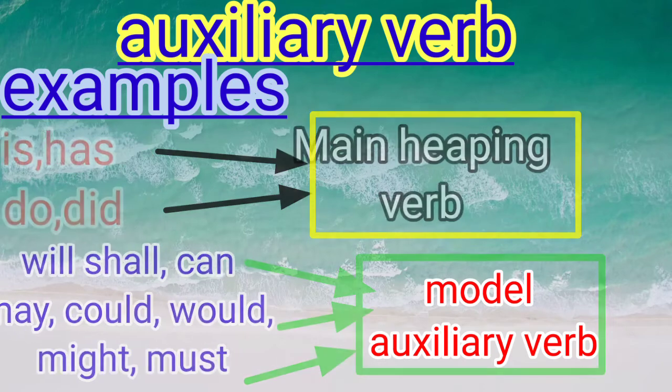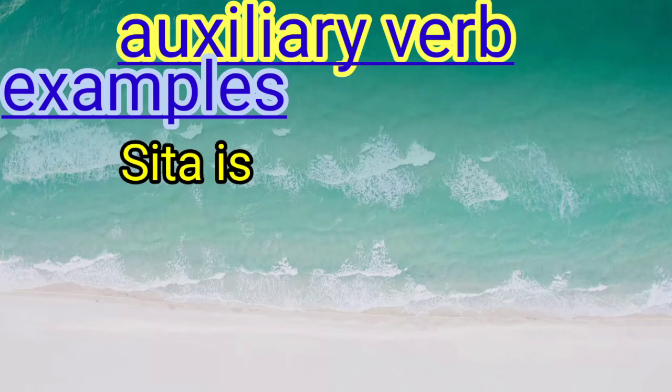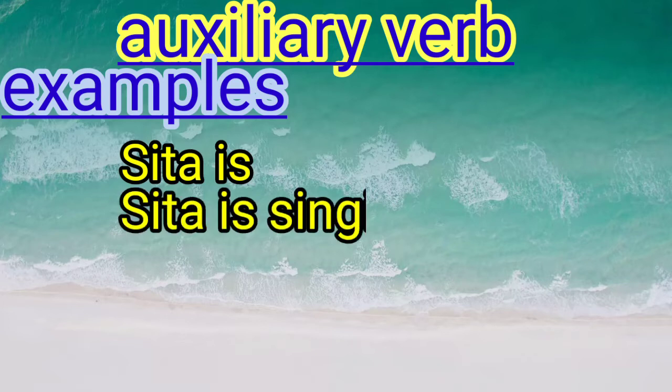Let me give you some sentence examples. 'Sita is' — can you understand what the sentence is saying about Sita? Now look at the complete sentence: Sita is singing. Here 'is' is the helping verb and 'singing' is the main verb.